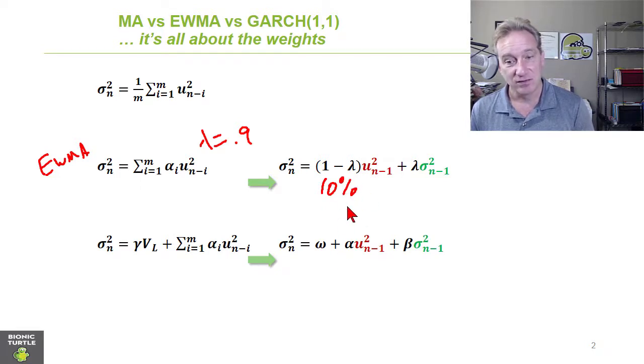Then the weight on the day before that, which is not explicitly in this formula but embedded in it, is 0.9 or 90% of the 10%. So we go back to day N minus two and really implicitly in this recursive formula, that day squared return is getting a 9% weight.